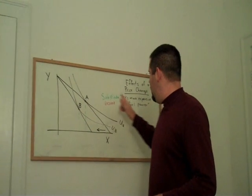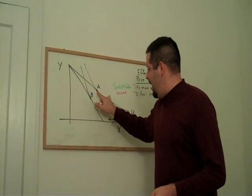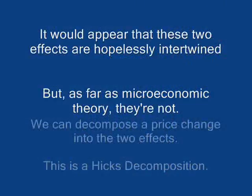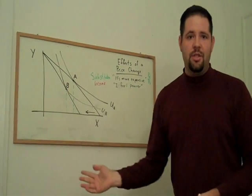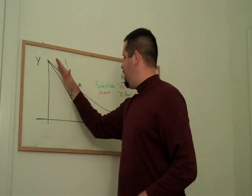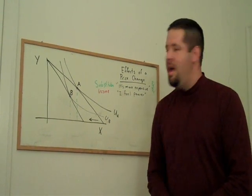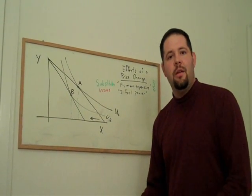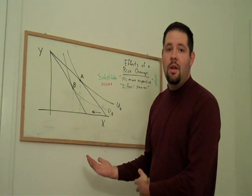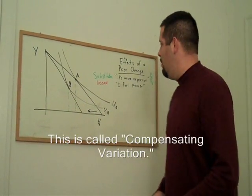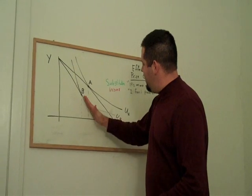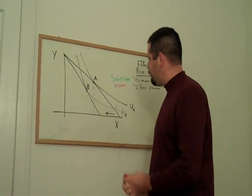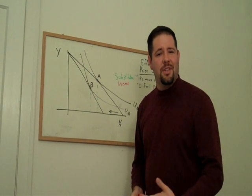They're both acting when we go from bundle A to bundle B with this increase in price. I want to walk you through decomposing this price change into these two effects. The price change made this individual worse off. And we need to ask ourselves, how much money would we have to compensate this individual to make them just as well off as before? It turns out that if we compensate this individual enough to buy his old optimal bundle, that's going to be just too much money.